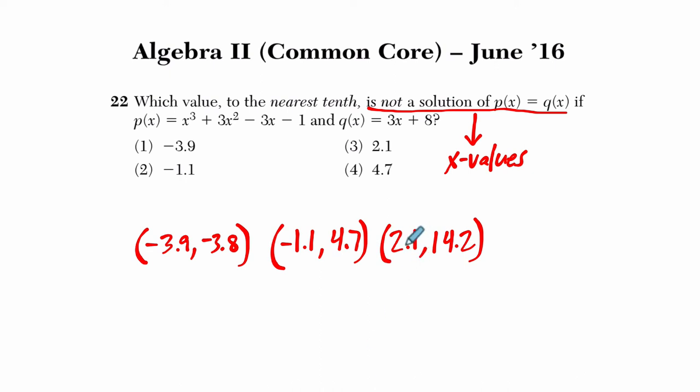So if you look at this, where we have our x values here, 2.1, negative 1.1, negative 3.9, and those are the solutions. When I plug in 2.1 to about 2.1 to p(x) or q(x), I get the same output. I get 14.2. I plug in negative 1.1 to both of them. I both get about 4.7 and negative 3.9 into both. As an input, it gets about negative 3.8. So these are all, in fact,